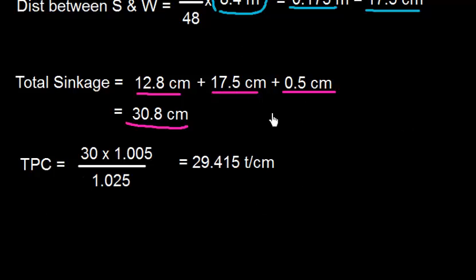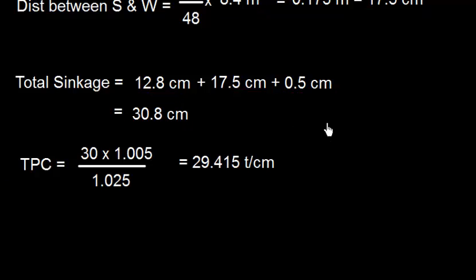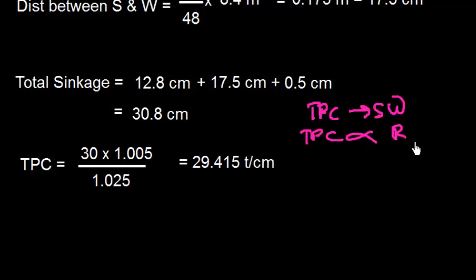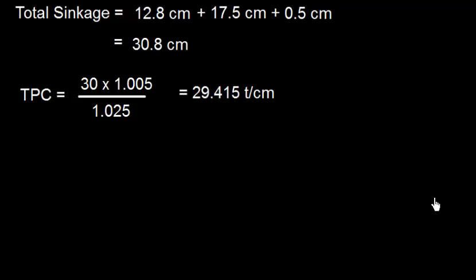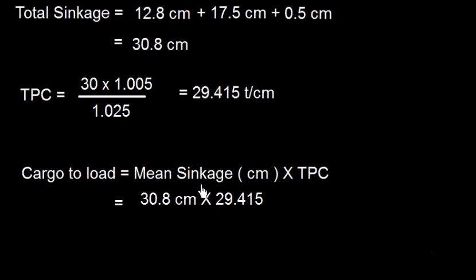The TPC given is for salt water only. Since TPC varies directly proportional to relative density, the TPC for dock water (RD 1.005) = TPC_sw × (1.005 / 1.025) = 30 × (1.005 / 1.025). Cargo to load is then simply: sinkage in centimeters × TPC for dock water.